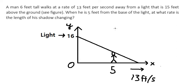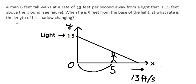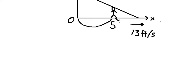So first, we know that from the base of the light to the man, we have 5 feet. They want to find the rate the length of his shadow is changing. That is his shadow here.